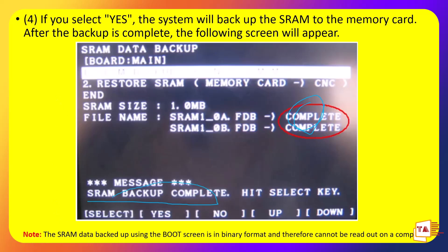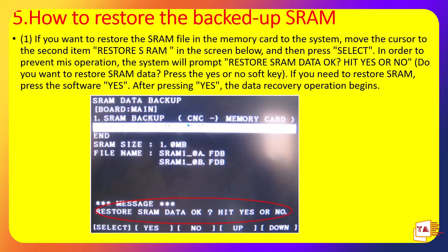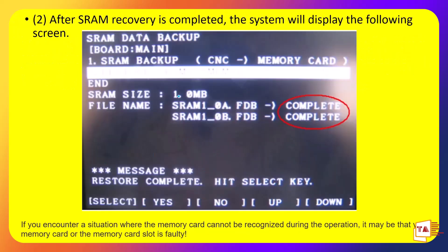SRAM data backed up using the board screen is in binary format — you can read it on a computer, but it is for backup and restoration purposes only. If you open it, you will see it in binary format. For SRAM Restore, the process is similar: select the restore option, confirm, and after completion, restart the system. You can then verify the backup parameters have been restored.